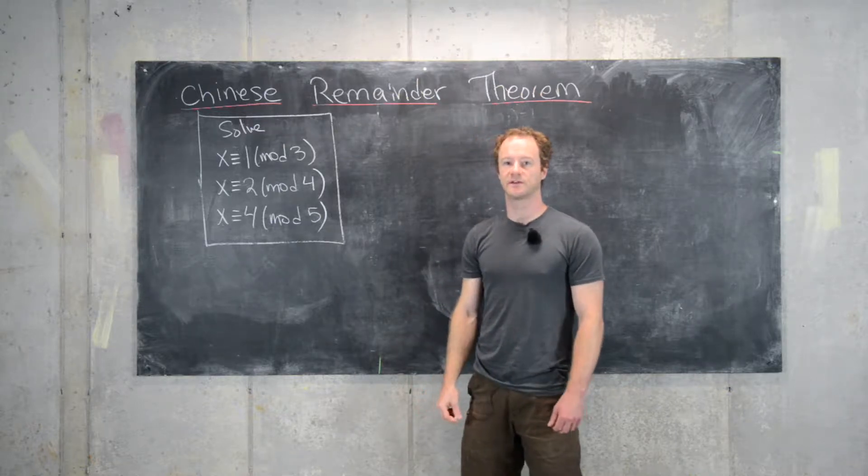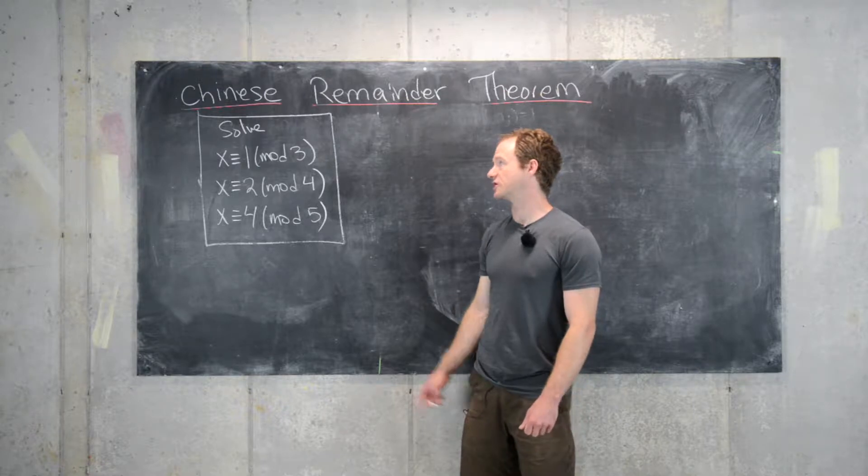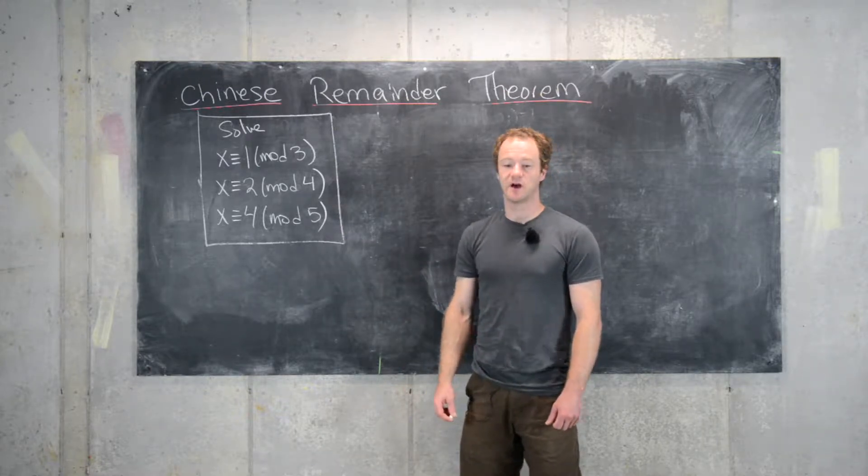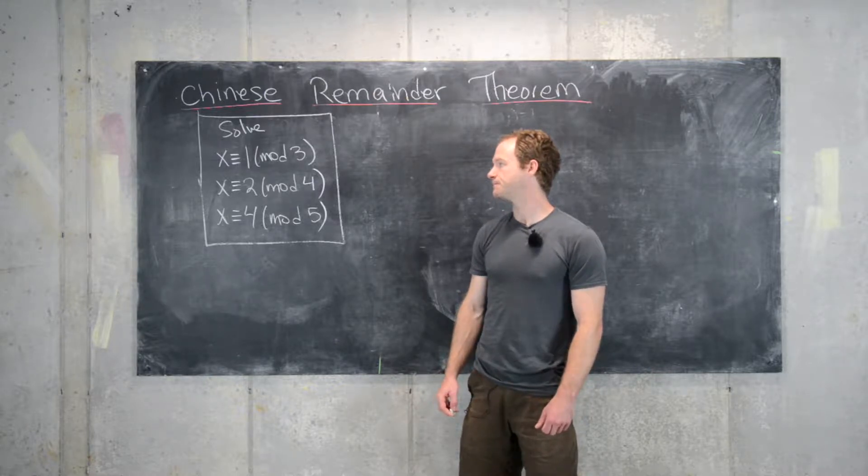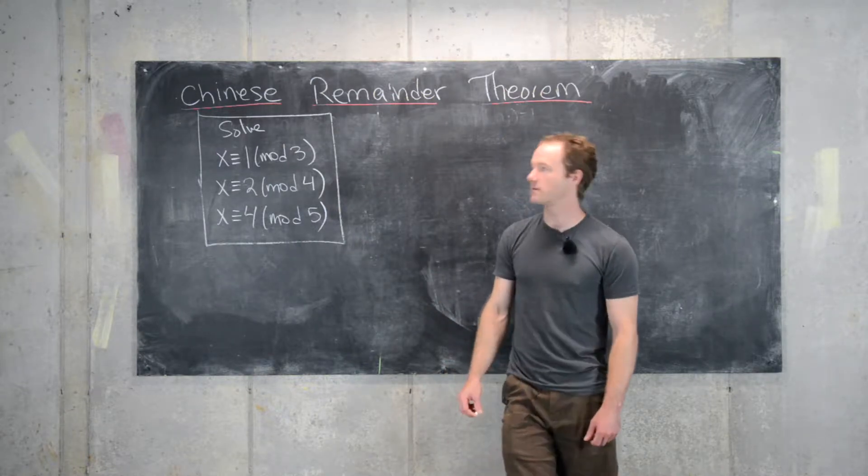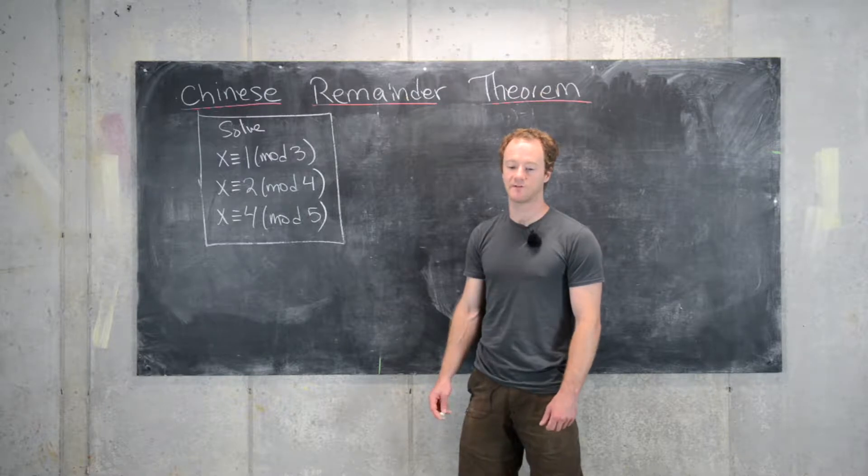Okay, in this video we're going to give an example of the Chinese Remainder Theorem in action. In other words, we want to solve this system of linear congruences. So we have this setup: X is congruent to 1 mod 3, congruent to 2 mod 4, and congruent to 4 mod 5.